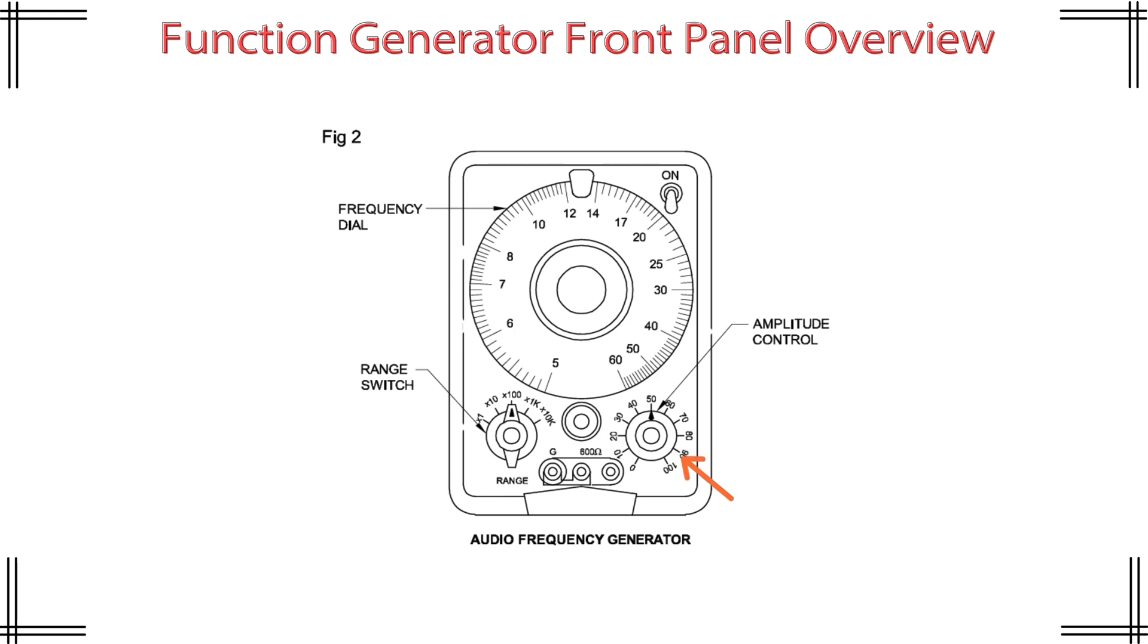Number three. Amplitude control. Right side knob. Label: Amplitude control. Function: Adjusts the output signal's voltage amplitude. Volume level for speakers or input level for devices. Use: Avoid overloading circuits or match signal level with receiving equipment.